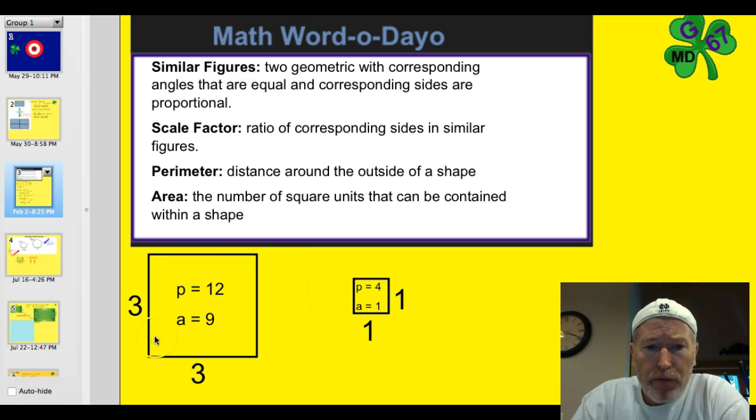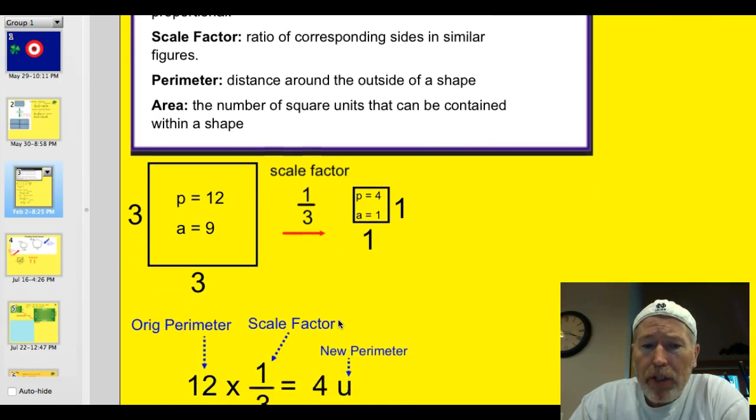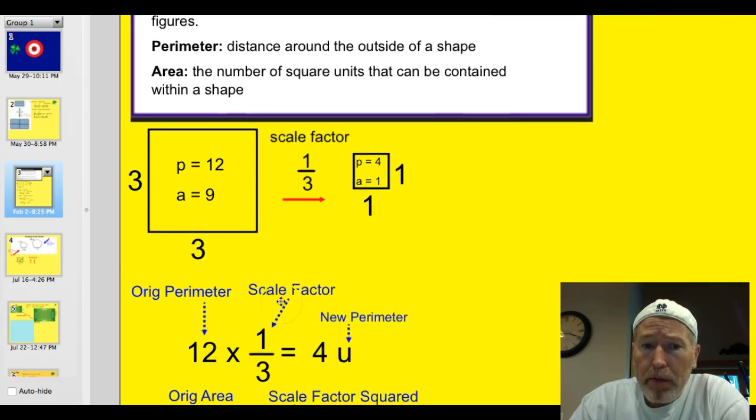So in our original square, it was 3 by 3, or 3 units by 3 units. Therefore, the perimeter is 12 and the area is 9. And you can see I've already put the area and perimeter in on the smaller one. But the scale factor of this is one-third. This one is, everything is one-third the size. Therefore, the sides, instead of being 3, are 1.